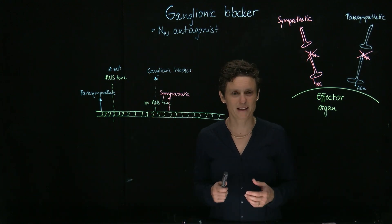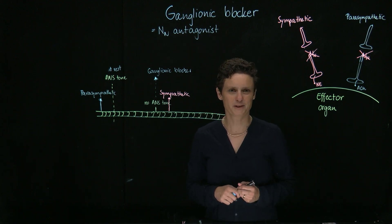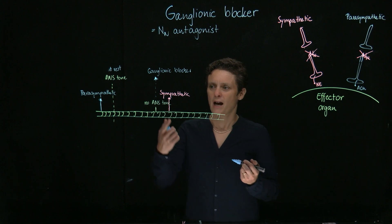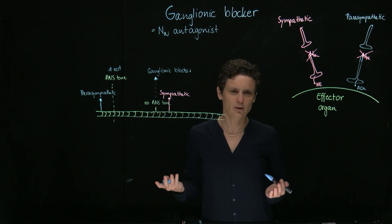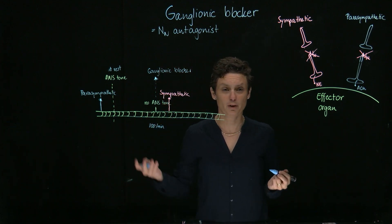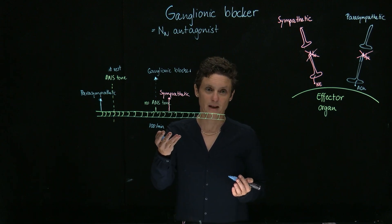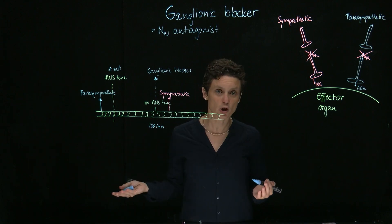Let's use a specific example. Let's figure out the effect of a ganglionic blocker on heart rate. The heart rate without any autonomic tone would be about 100 beats per minute. Now we all know that we don't have a heart rate of 100 beats per minute, and the reason is because there's tone.